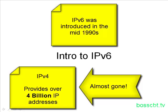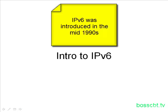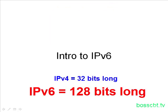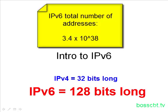IP version 6 is significantly bigger than IP version 4, not only in the number of IP addresses but in the IP address format itself. IP version 4 is 32 bits long, and we've chopped those up and subneted those quite a few times. IP version 6, though, is 128 bits long. To give you an idea of how many addresses that provides, the formula is 3.4 times 10 to the power of 38.